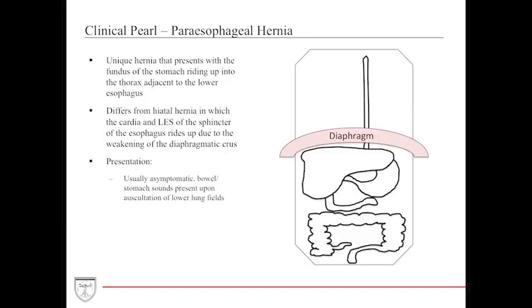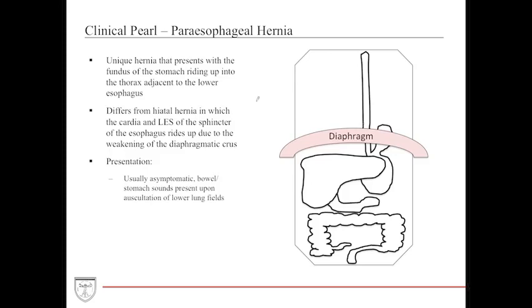A paraesophageal hernia is distinct from a sliding hiatal hernia. In this condition, the fundus or cardia of the stomach rides up next to the lower esophageal sphincter into the thoracic cavity. This can result in stomach sounds on auscultation of the lower lung fields, which may be concerning — hearing stomach sounds in the thoracic cavity can be a sign of a paraesophageal hernia. The stomach protrudes back up through the diaphragm, weakening the diaphragmatic crura and allowing gastric contents into the lower lung fields. It may be asymptomatic.